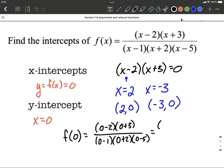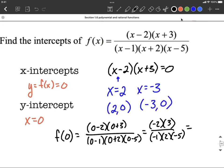A little bit of reducing down, this will be -2 times 3 over -1 times 2 times -5. So we have -6 over, we have two negatives in the denominator so that will be positive 10, which works out to be -3/5.